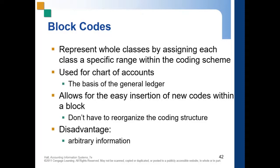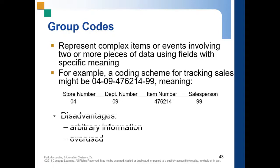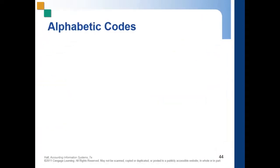Next is group codes. They represent complex items or events involving two or more pieces of data using fields with specific meanings. For example, in large companies or multinational companies with many locations, there is a specific code for the store number, a code for the department number, a code for the sale number, and a code for the salesperson. That is how group codes work. The disadvantages are arbitrary information and overuse.